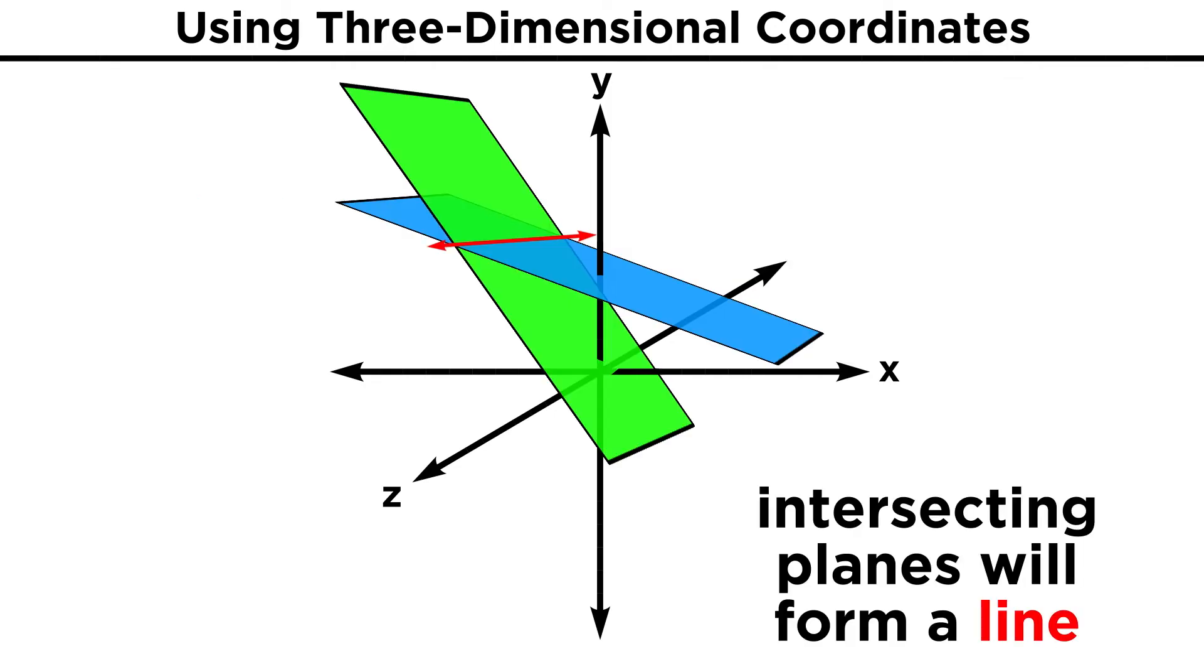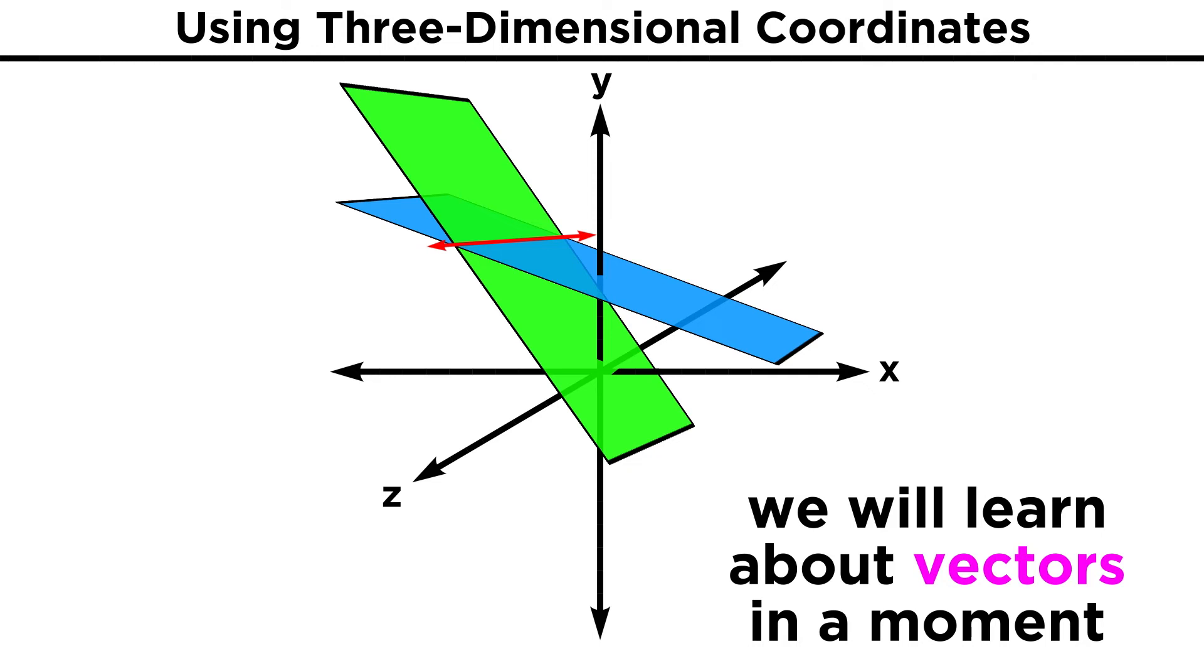The intersection of two planes, so long as they are not parallel, will give us a line, and there are a number of ways a line can be represented algebraically, including with vectors, which we will get to in a moment.